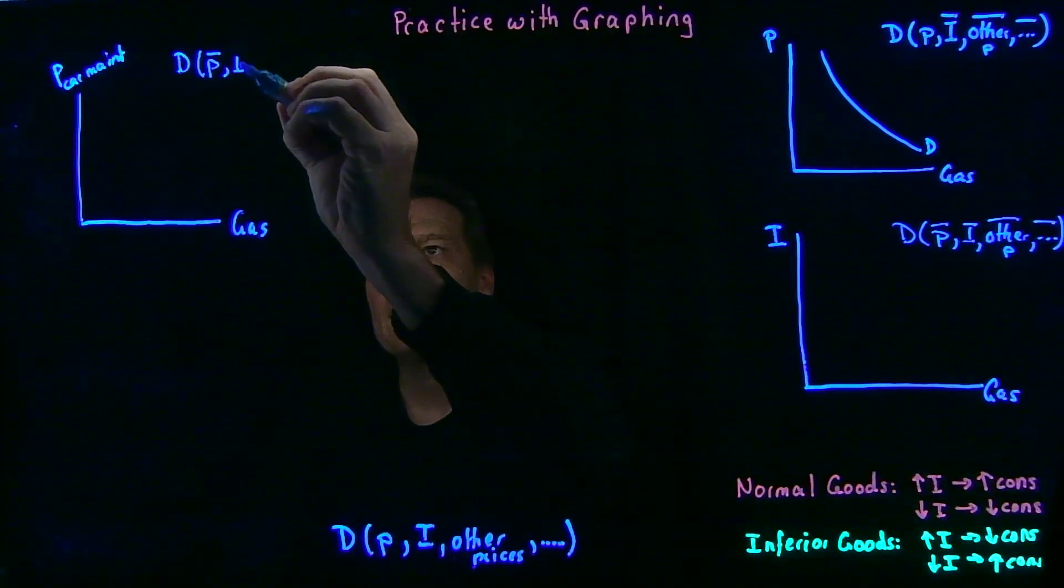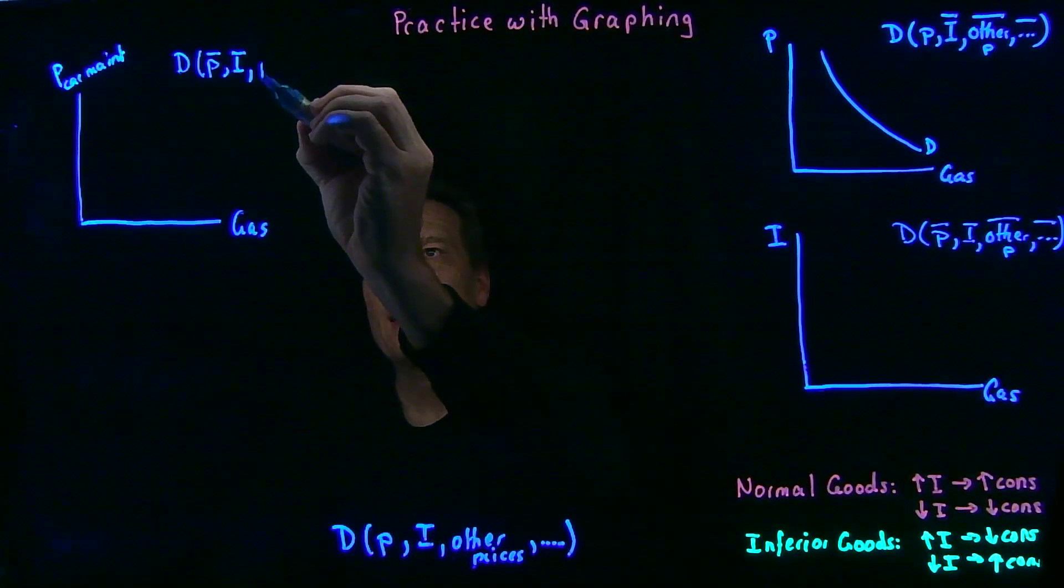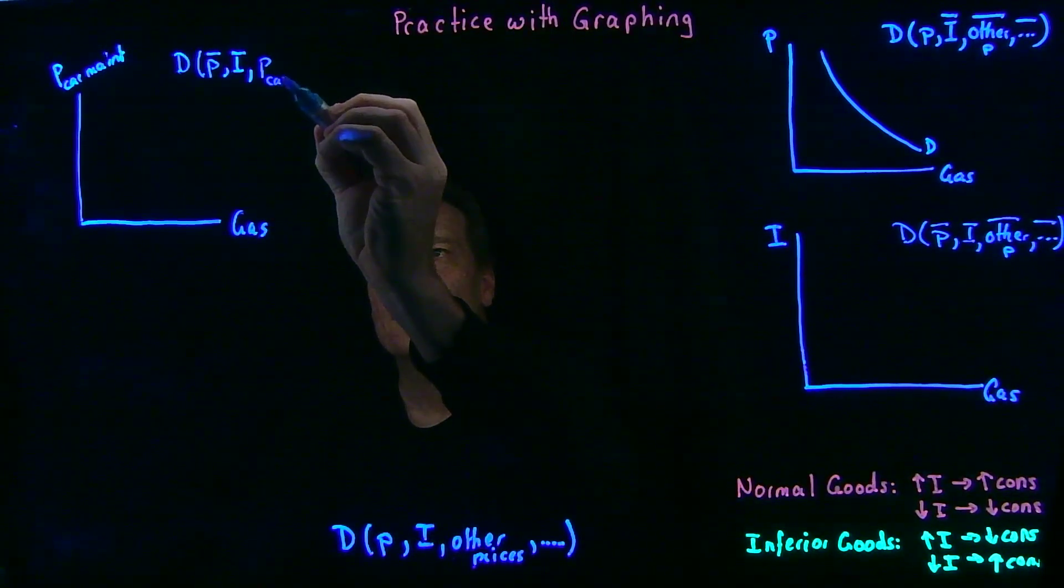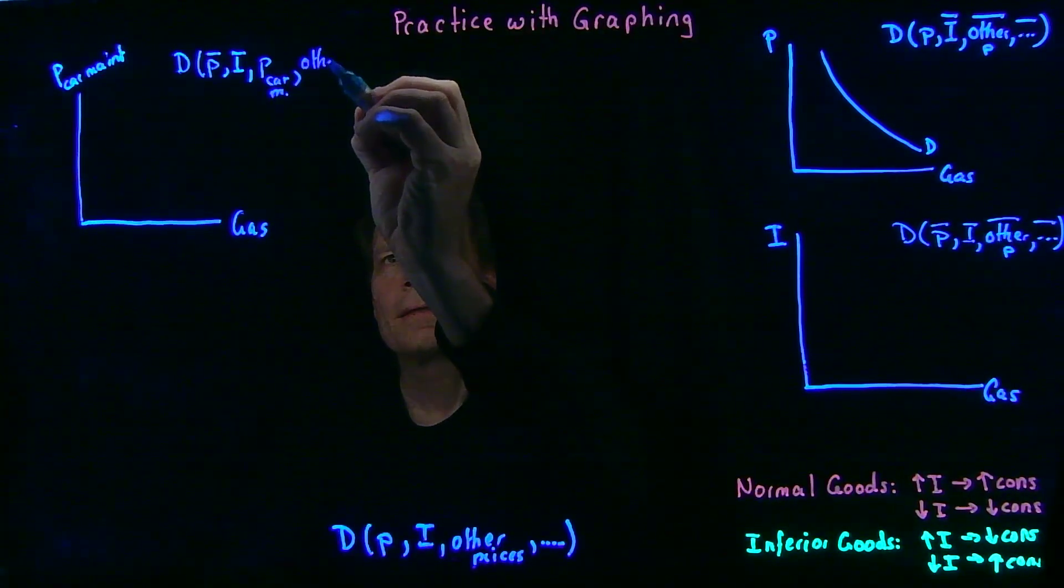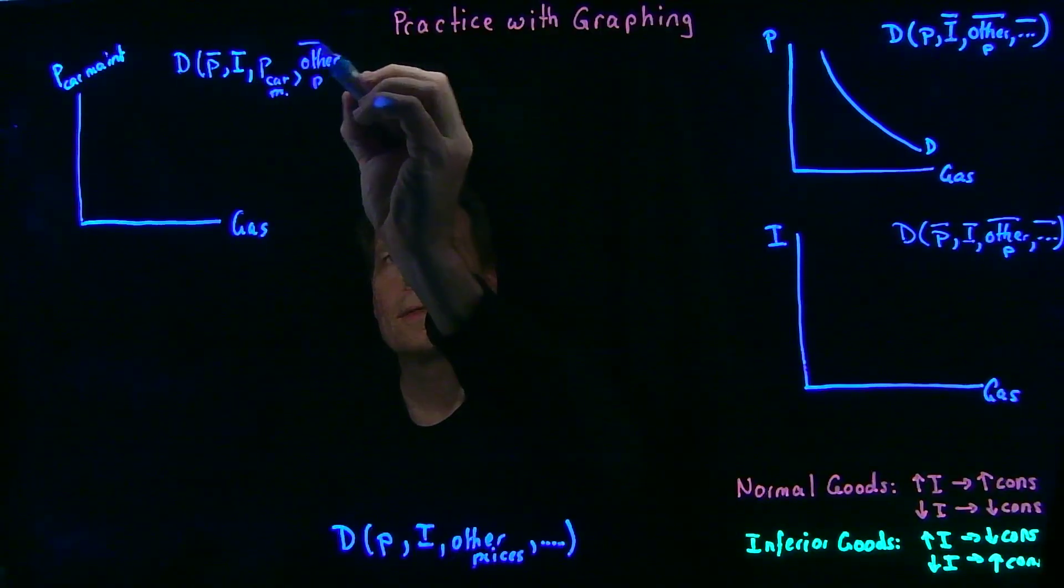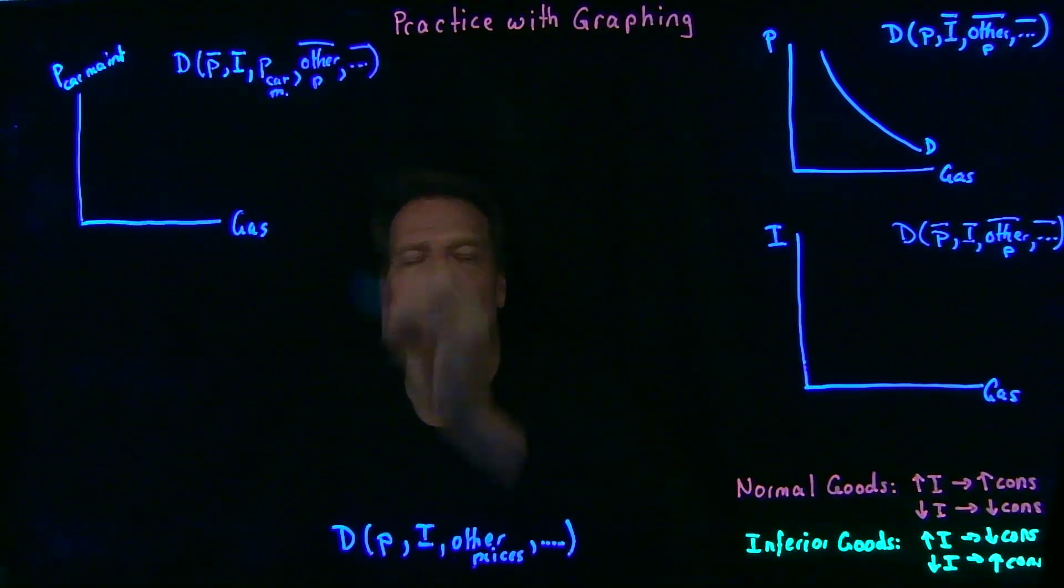holding income fixed, but allowing the price of car maintenance to change, but other prices still held fixed, as well as everything else that might matter.